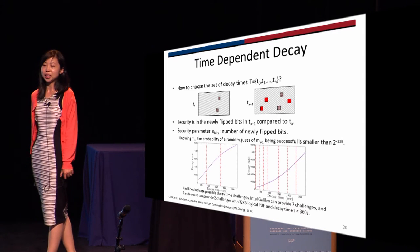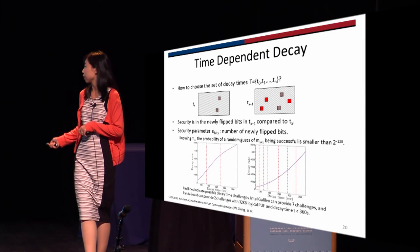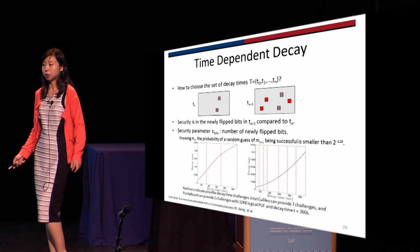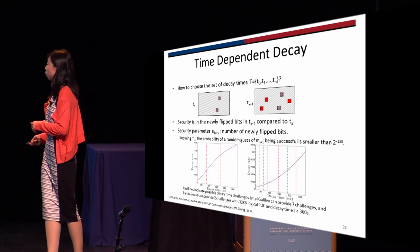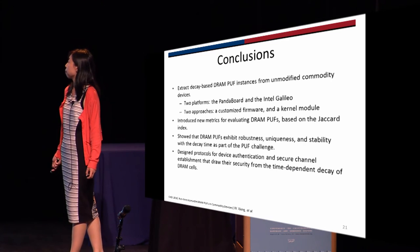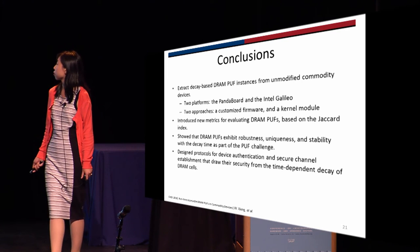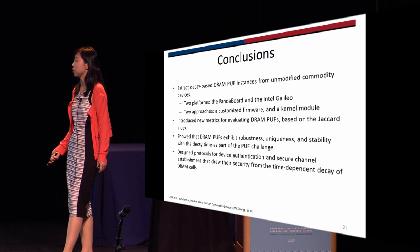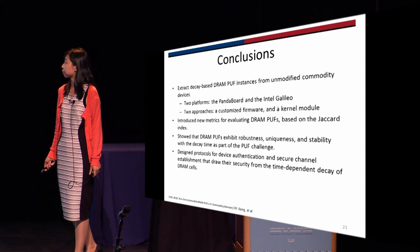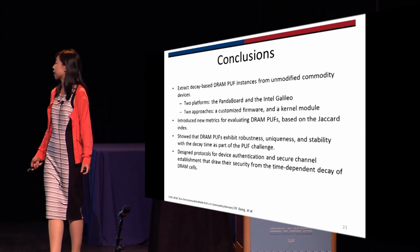You can refer to the paper for detailed calculations. Going back to the devices, if we use the same logical PUF size and decay time less than six minutes, Intel Galileo can provide seven challenges and the PandaBoard can provide two challenges — but this is only for one logical PUF, and there are many logical PUFs on these devices. In conclusion, we are able to extract the decay-based DRAM PUF from unmodified commodity devices using two platforms and two approaches — a custom firmware and a kernel module — which allows us to access the DRAM PUF at runtime. We introduced new metrics based on the Jaccard index, and showed the DRAM PUF has robustness, uniqueness, and stability, with decay time acting as part of the PUF challenge.